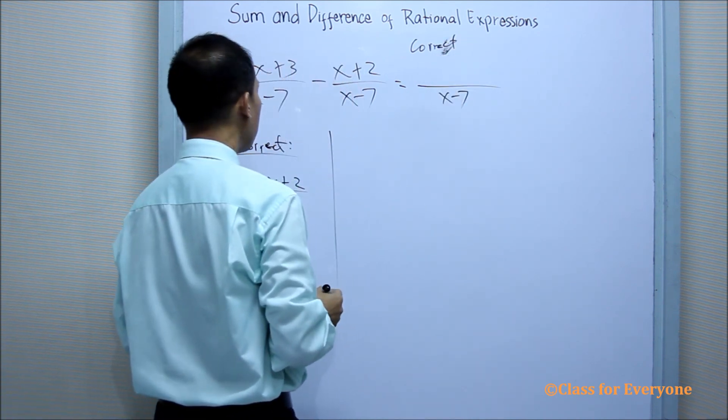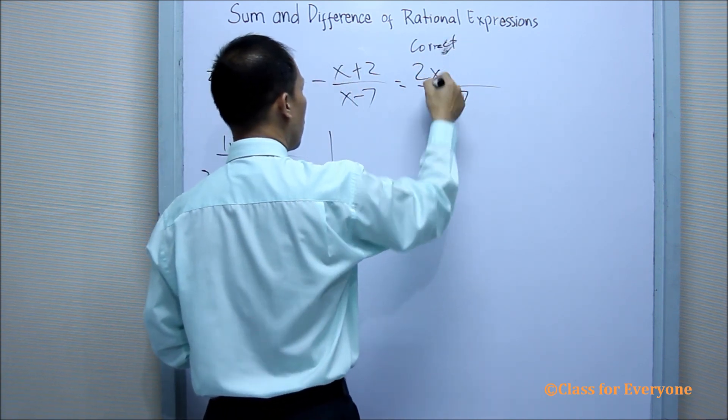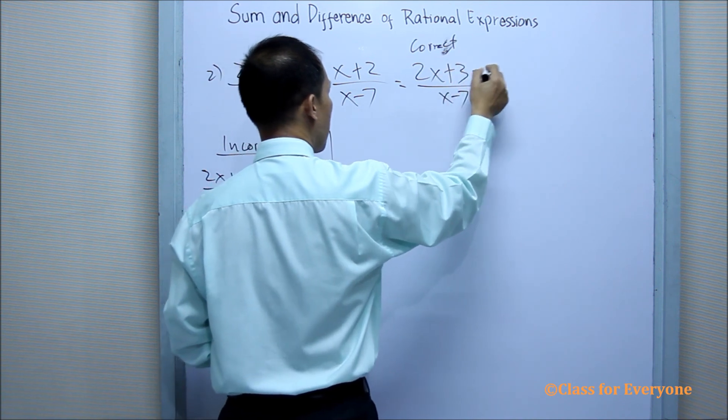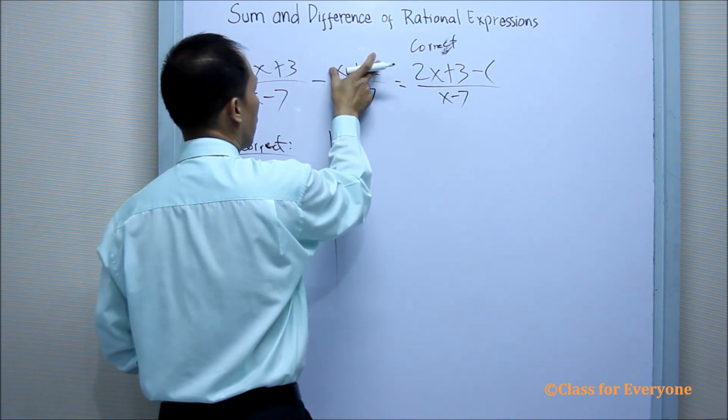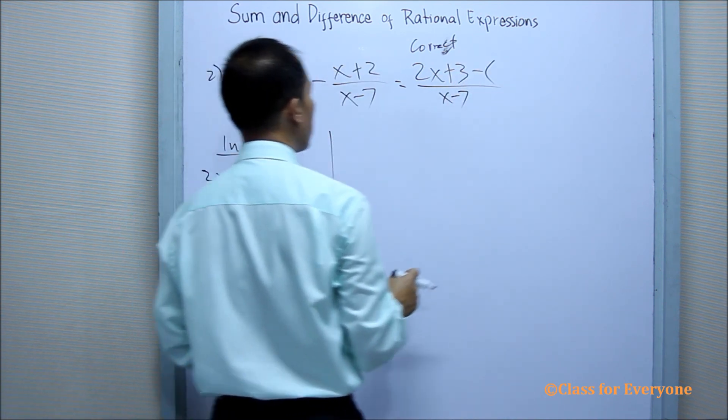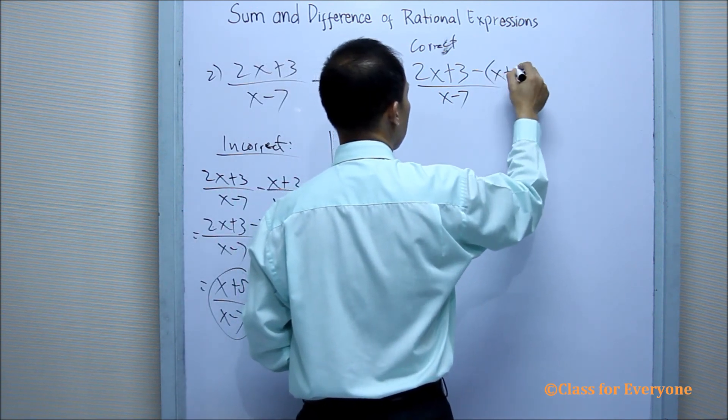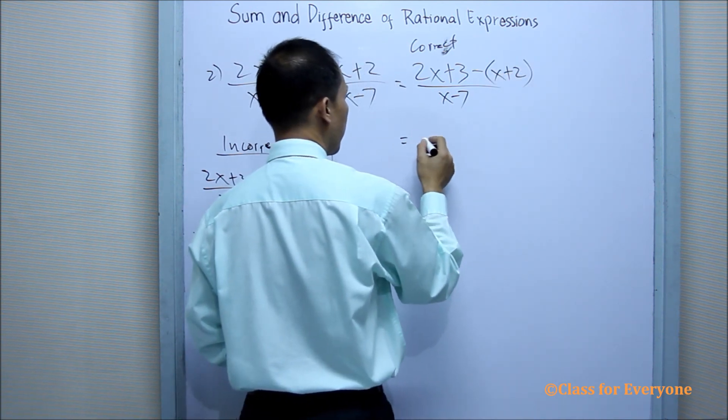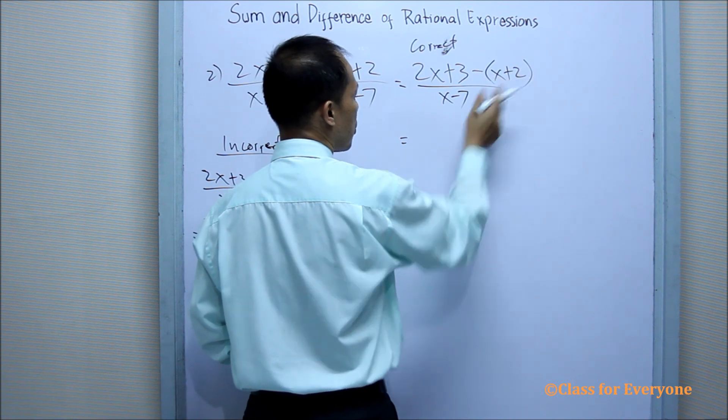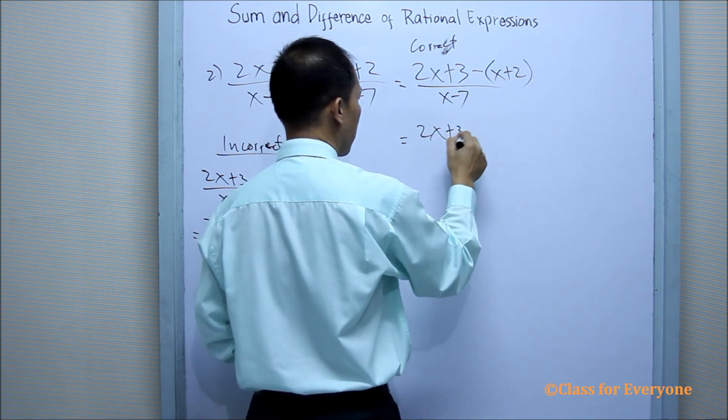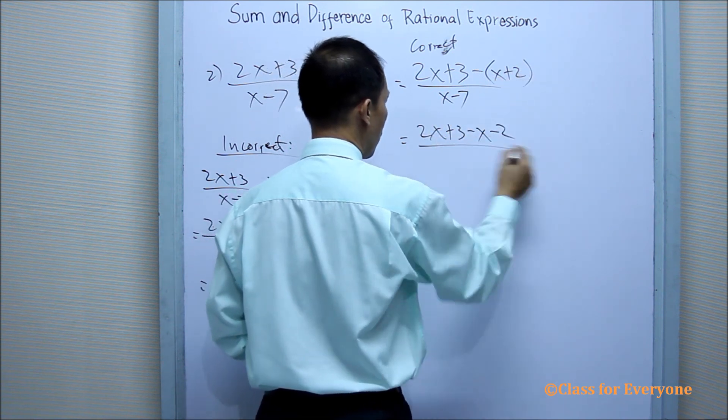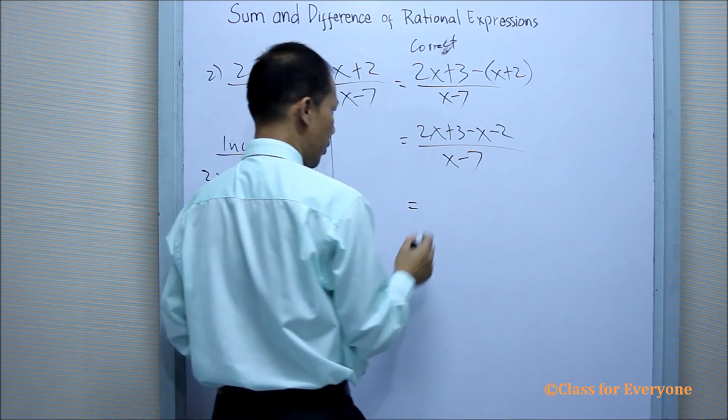The correct one will be 2x plus 3 minus the whole subtrahend, which is a binomial, x plus 2. And then, changing the sign of the subtrahend, minus x minus 2 over x minus 7.